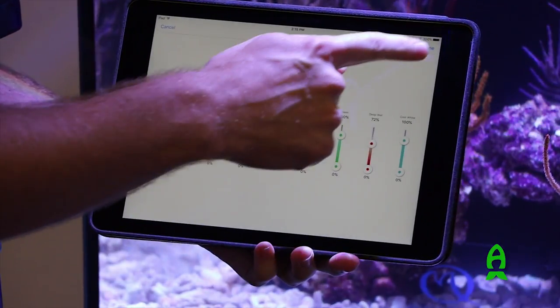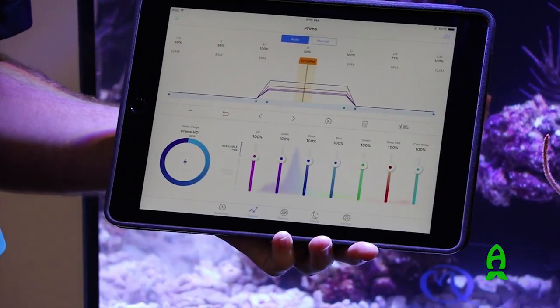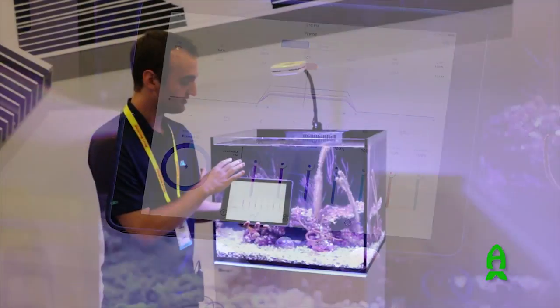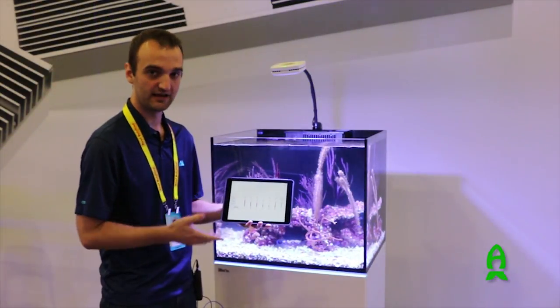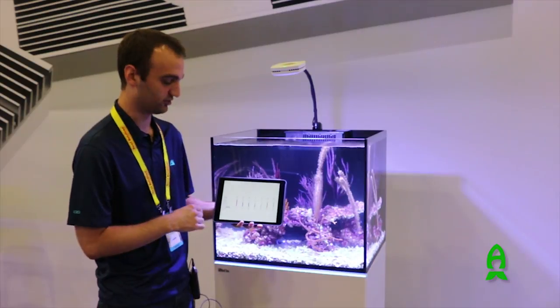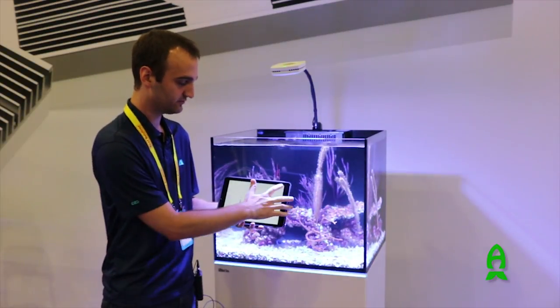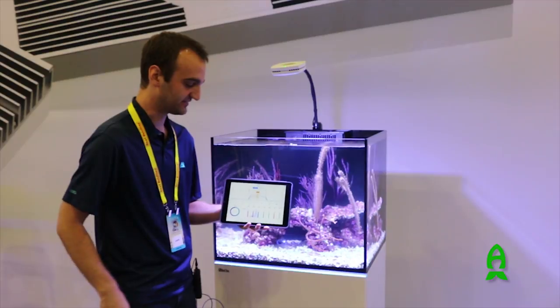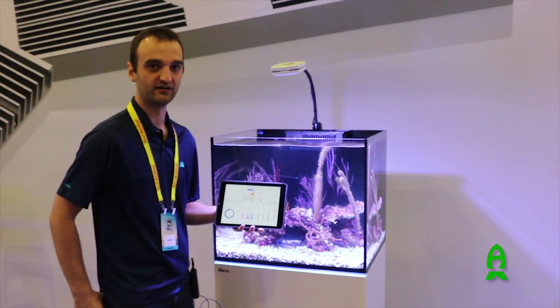So we'll go ahead and change that. And the color for the LEDs is dynamically displayed on the light, so you can see what it's going to look like during the day. When you're done, hit Done at the top, and the schedule is propagated to the lights.